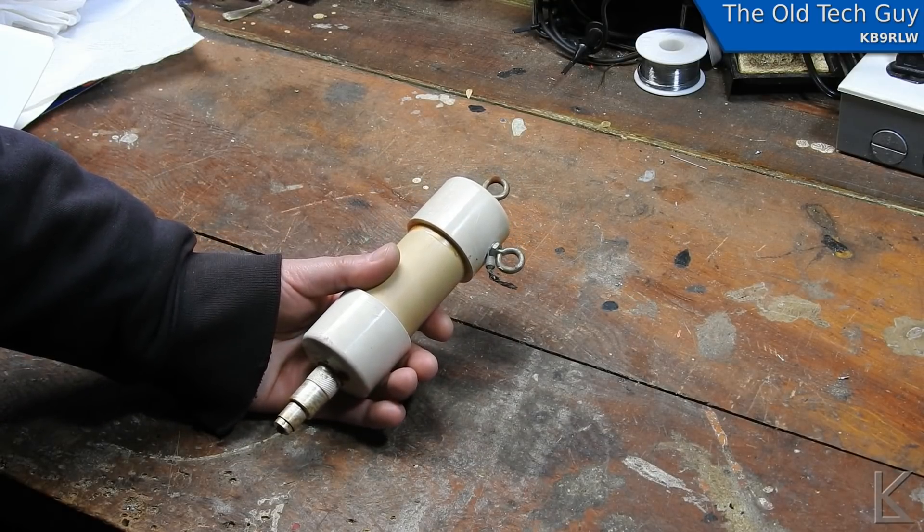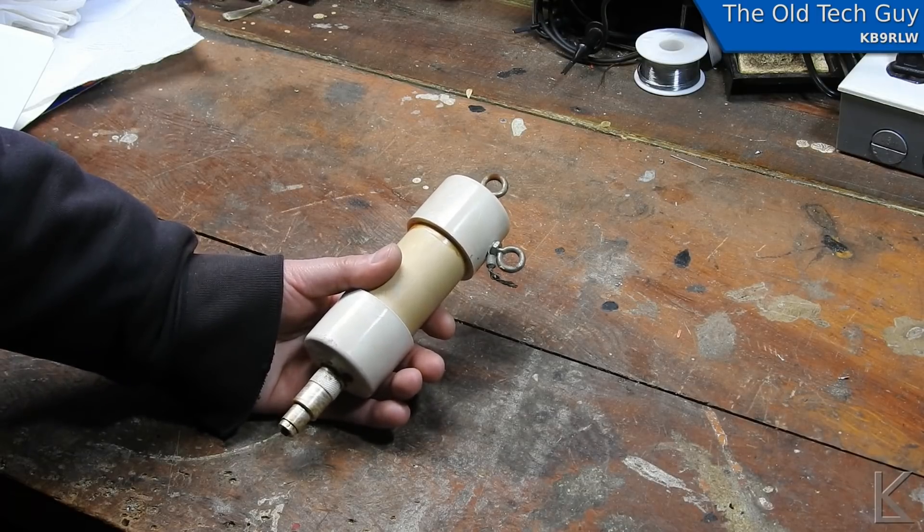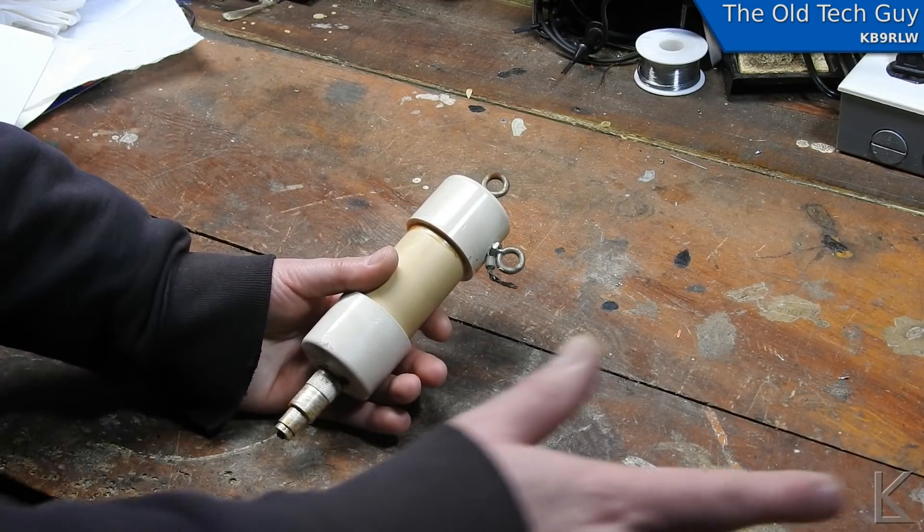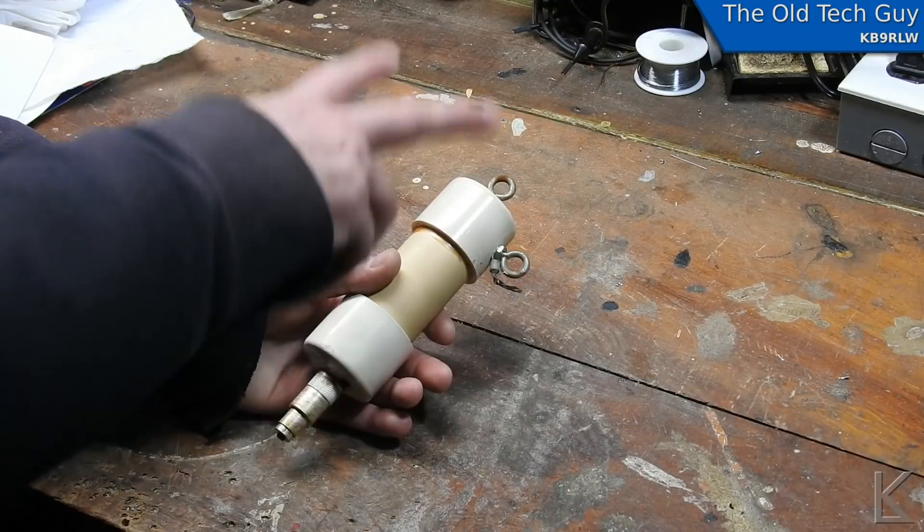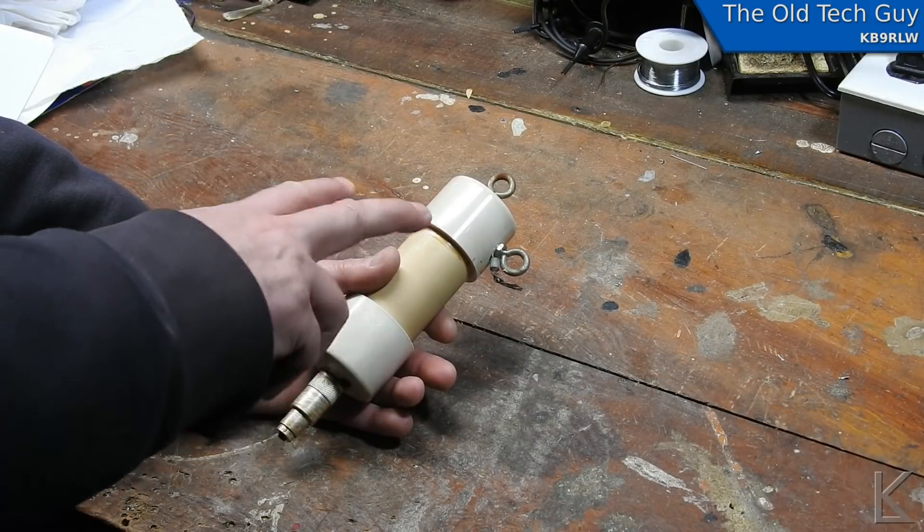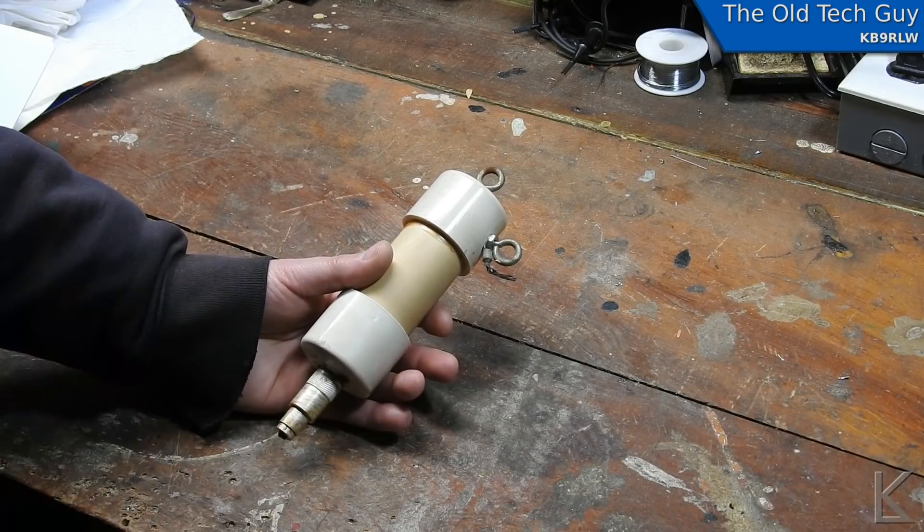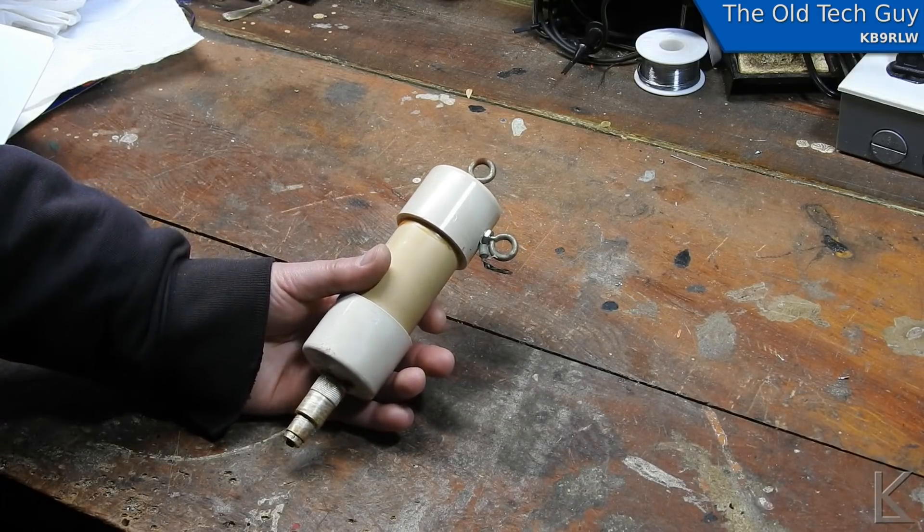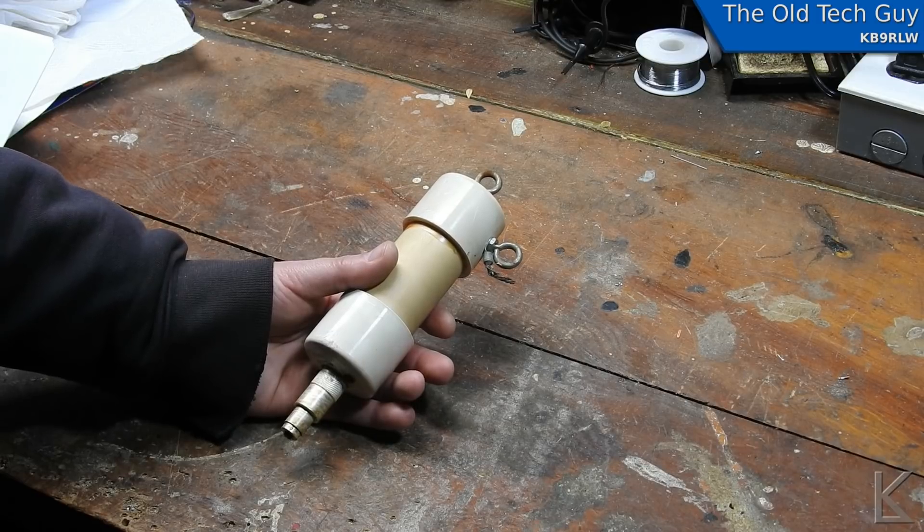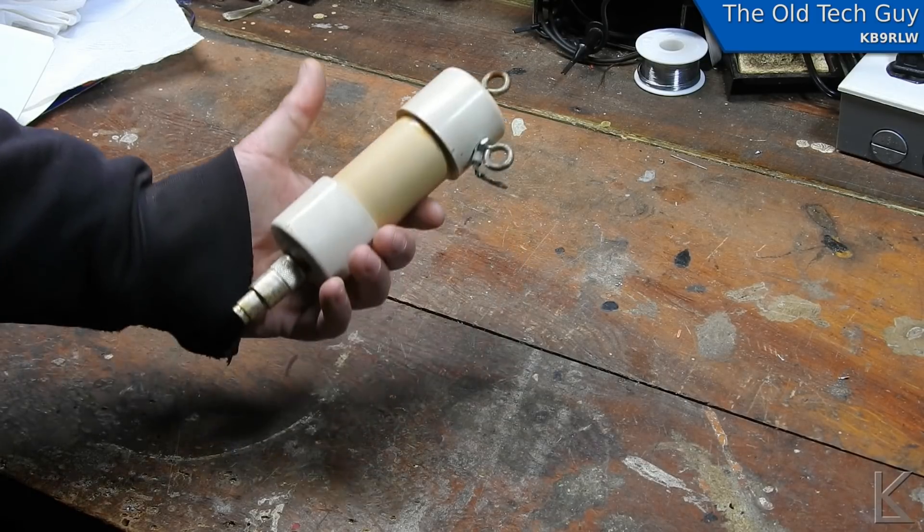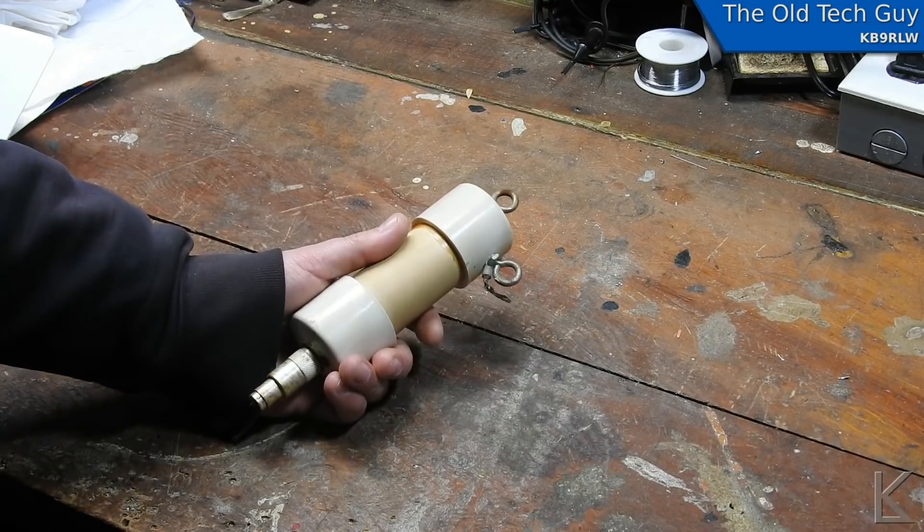A 1:1 current balun or choke is designed to choke off common mode interference, so interference that comes in equally on both sides of the antenna gets choked off before it comes down the wire. It also cuts down dramatically on the amount of reflected power that makes it back down your coax.